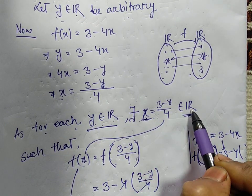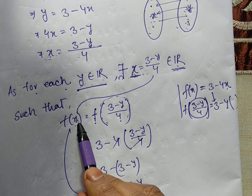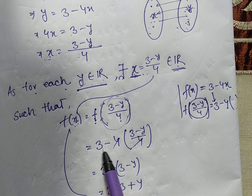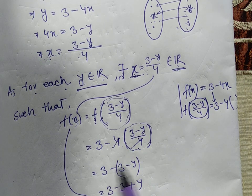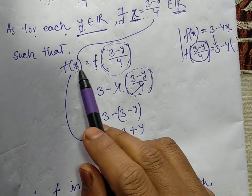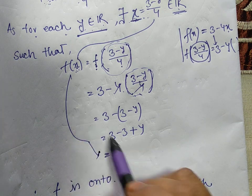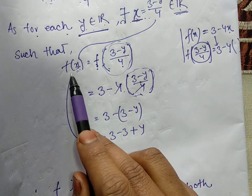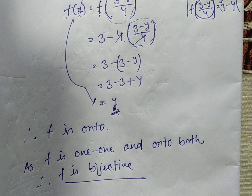We simplified to get x in terms of y. Since y is arbitrary, meaning any element, we found the corresponding x. For each y belongs to R, there exists x from the first set. We simplified and showed f(x) = y. The arbitrary y we considered is the image of x. For each y in the second set, we found corresponding x. Therefore f is onto. As f is one-one and onto both, therefore f is bijective.